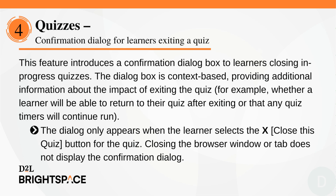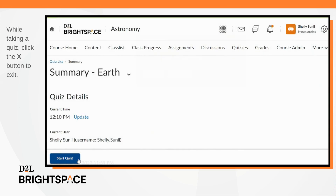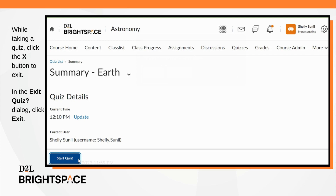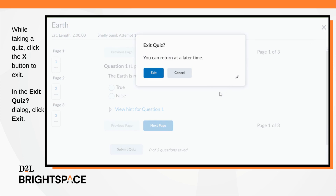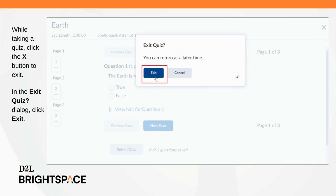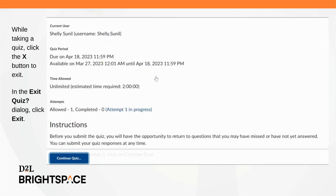Previously, there was no dialog or warning to learners who exited a quiz accidentally or on purpose. As a learner, while taking a quiz, click the X button to exit the quiz. In the Exit Quiz dialog, click Exit to return to the quiz summary page.